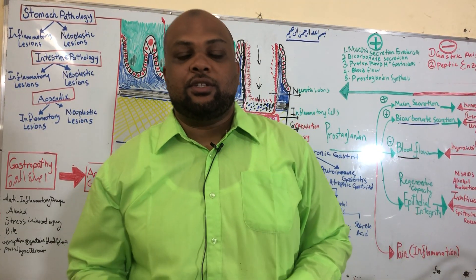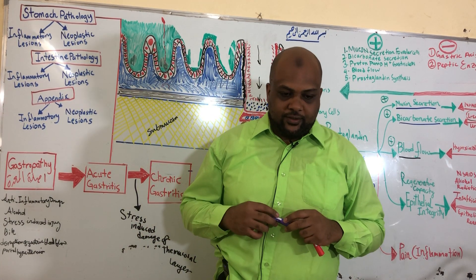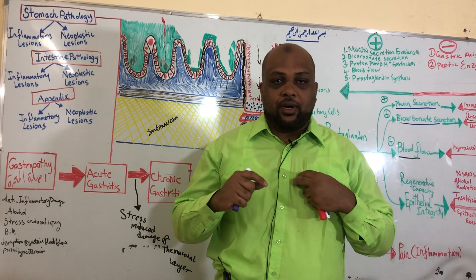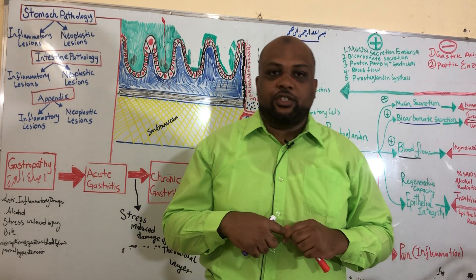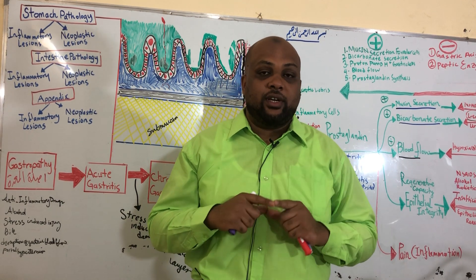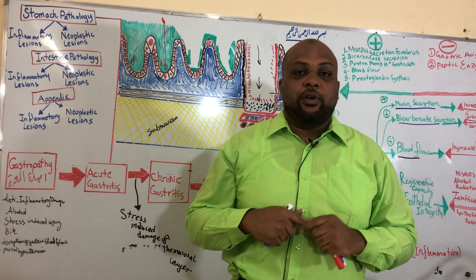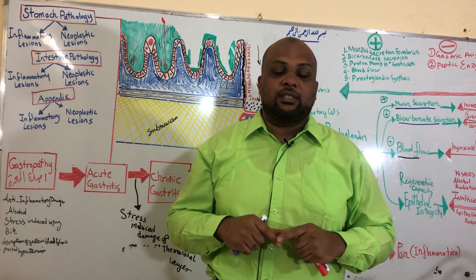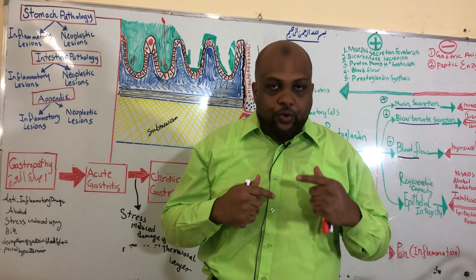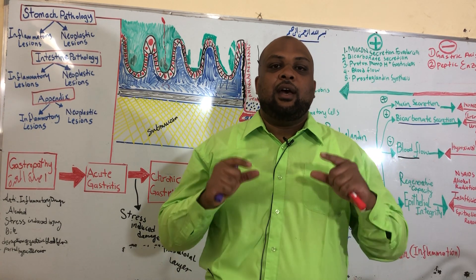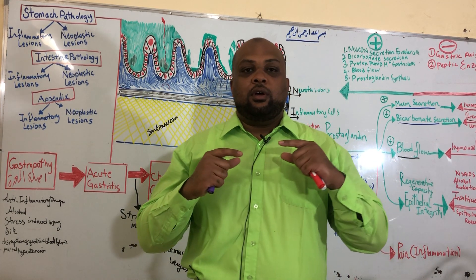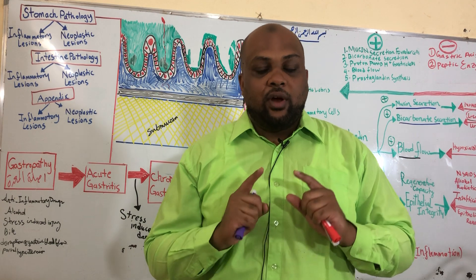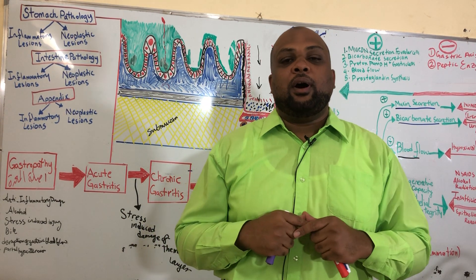Welcome to this discussion on autoimmune gastritis. We already talked about chronic gastritis being caused by two causes. The first is H. pylori infection, which accounts for 90% of cases of chronic gastritis, while 10% of cases are caused by an autoimmune attack against the epithelium of the gastric mucosa. Today we talk about autoimmune gastritis — chronic gastritis caused by an autoimmune attack.